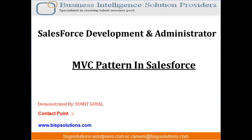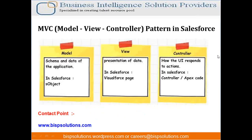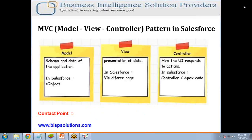To clearly differentiate: Model basically belongs to schema and data of the application — in Salesforce, we use S-object to represent a model. View is responsible for presentation of data — in Salesforce, we use Visualforce pages to create a view. Controller is responsible for how the user interface responds to action — in Salesforce, we use controller or Apex code to create a controller.